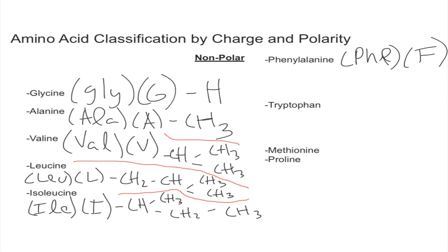Now we have phenylalanine, abbreviated PHE. We use F as the one-letter abbreviation because we save P for proline. An easy way to think about this one is to split the name into its two parts: the 'phenyl' part and the 'alanine' part. You draw alanine — just one carbon as CH2 — and then you add a phenyl group, which is a benzene ring with double bonds.